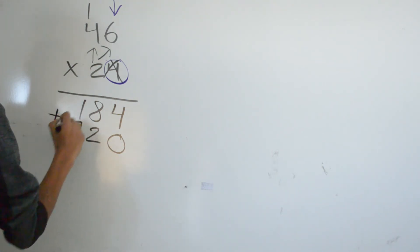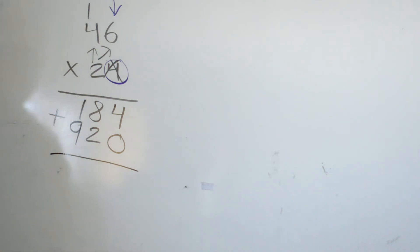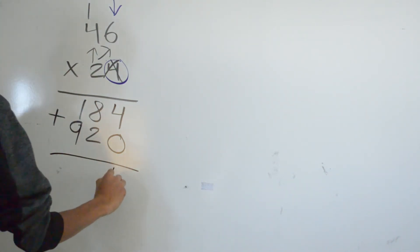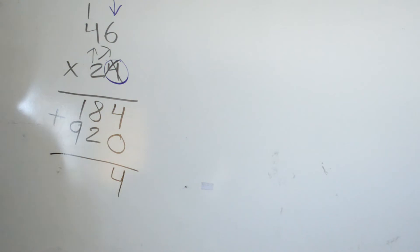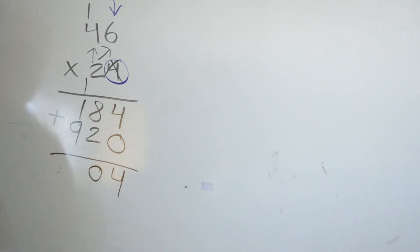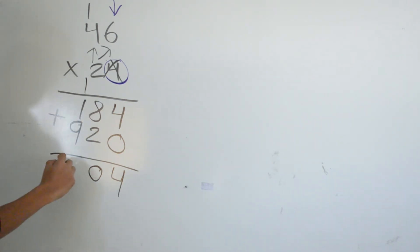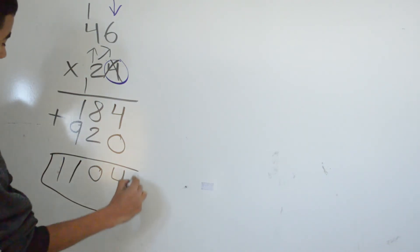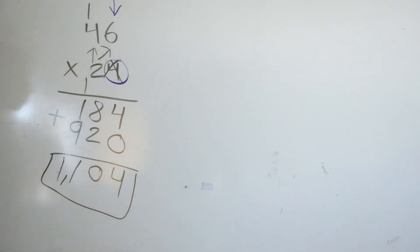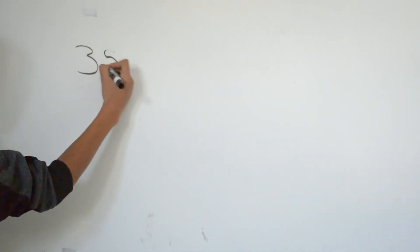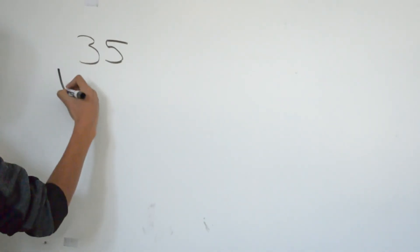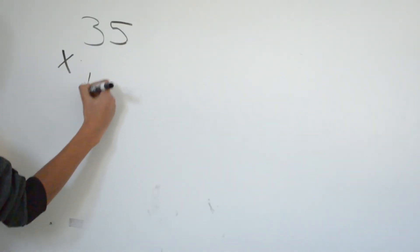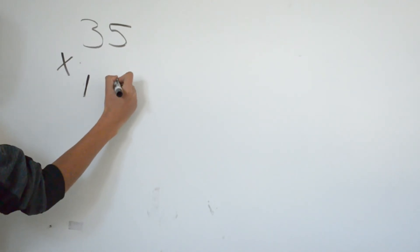So now we add both of our numbers. 4 plus 0 is 4. 8 plus 2 is 10. Carry the 1 on top. 9 plus 1 is 10, plus the 1 on top is 11. Our final answer is 1,104. Now we have 35 times 15.